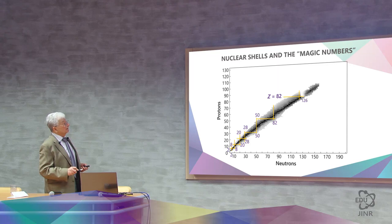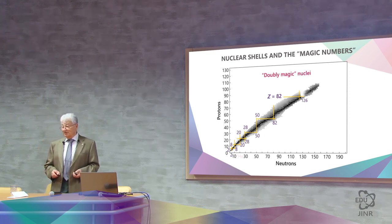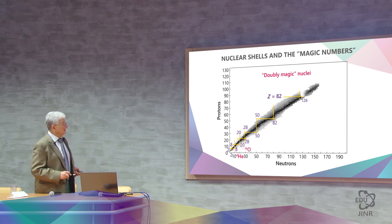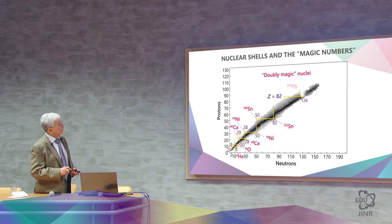These are the very nuclei that are at the intersection at which the number of protons and the number of neutrons are magic, and they are called doubly magic. That is helium, this is oxygen, calcium-40, calcium-48, nickel-56, nickel-78, tin-100, tin-132 and lead-208.